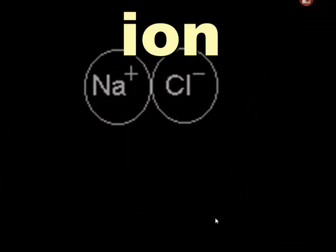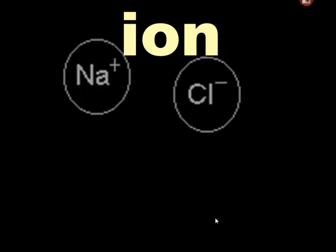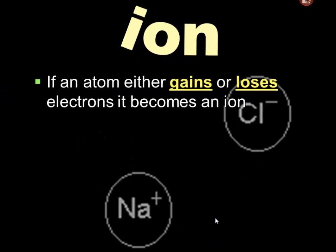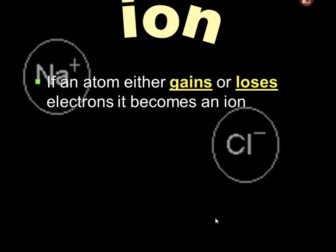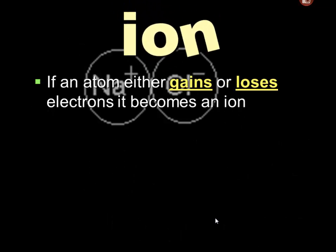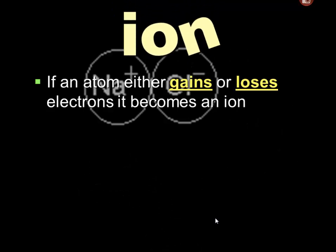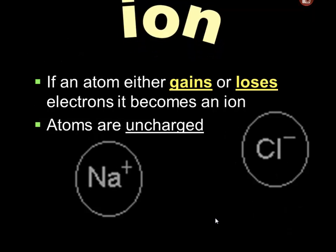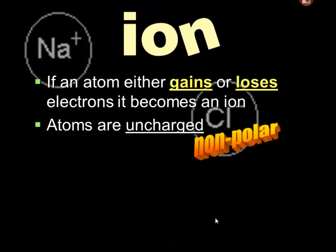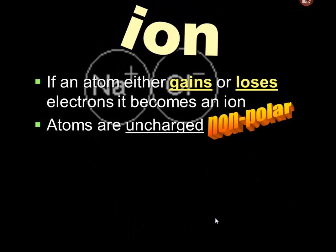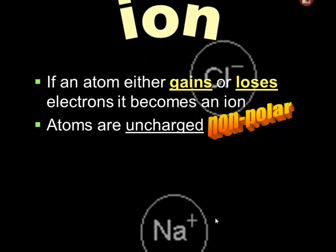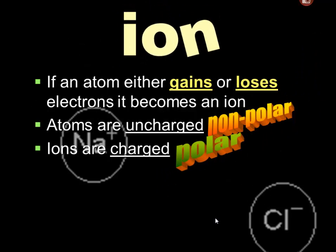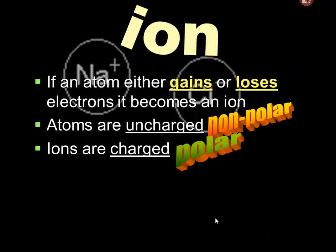An ion is a charged atom. If an atom either loses or gains electrons, it becomes an ion. Ions are very important in biological mechanisms. Atoms are uncharged — associate that with the word nonpolar. Ions are charged — associate that with polar. We'll see this in the water unit.